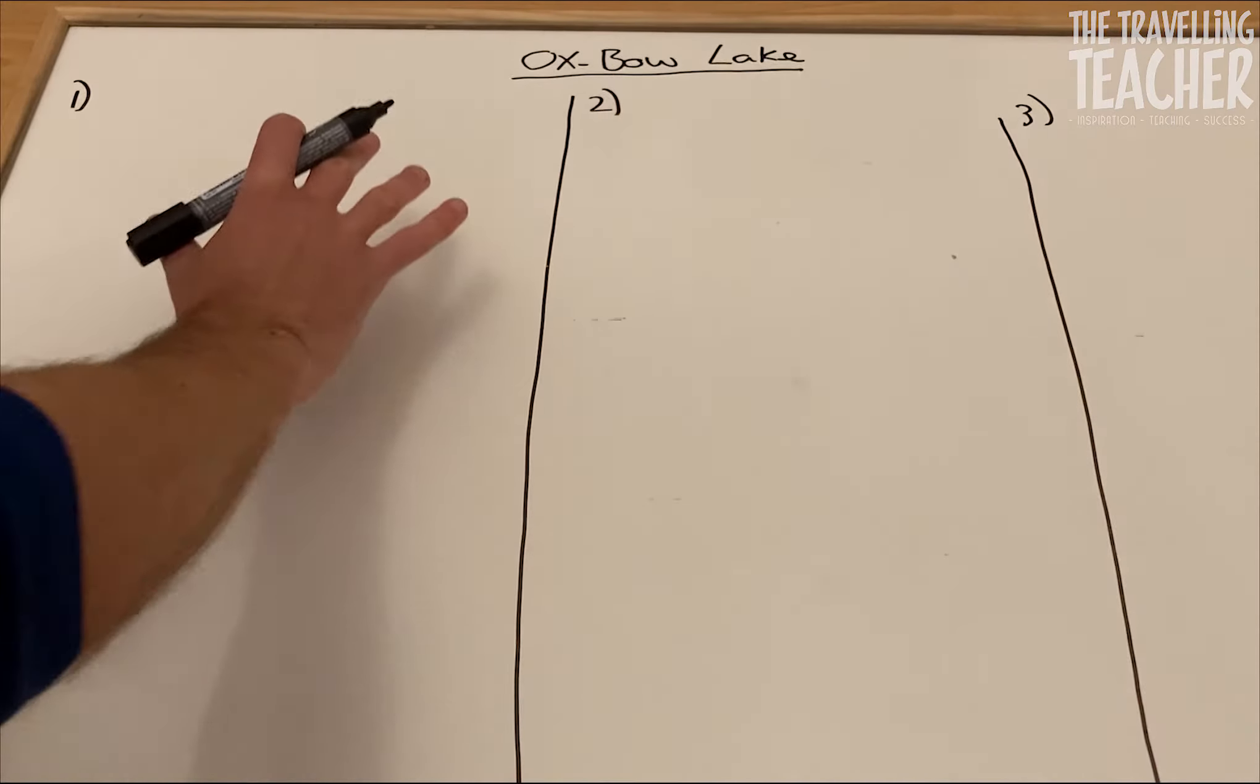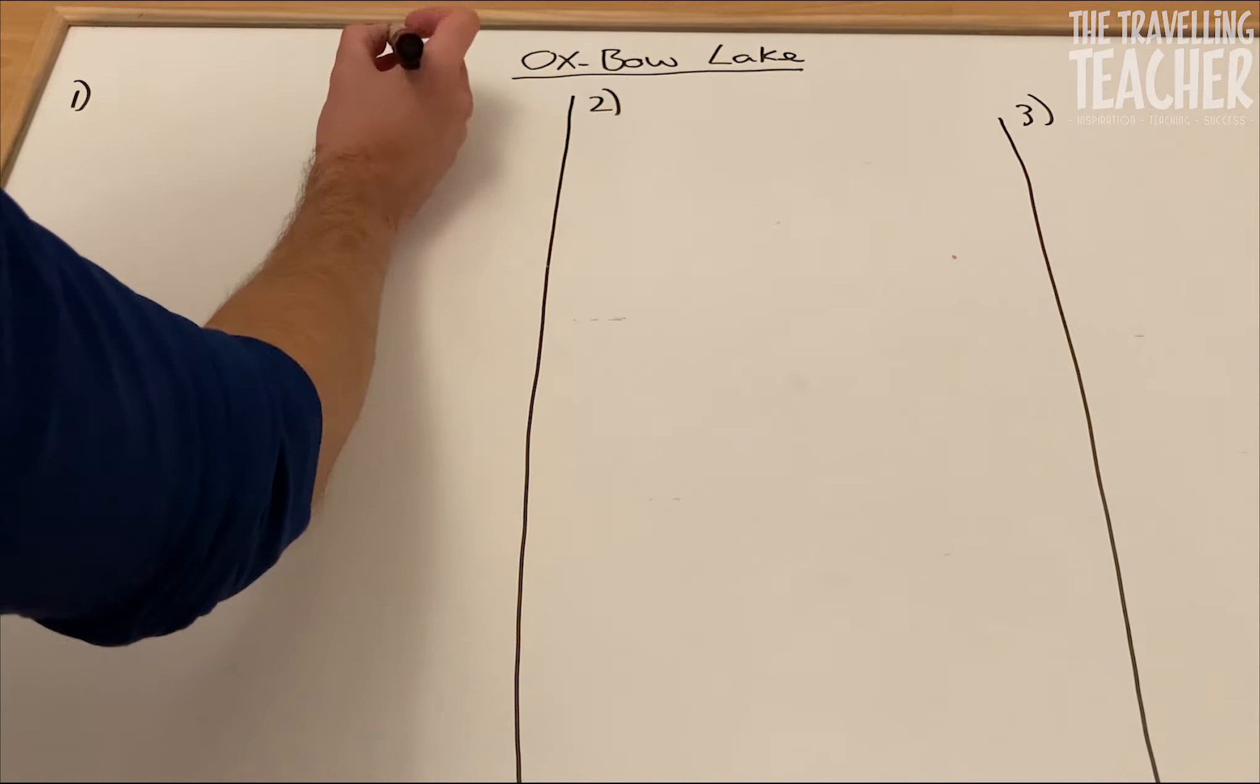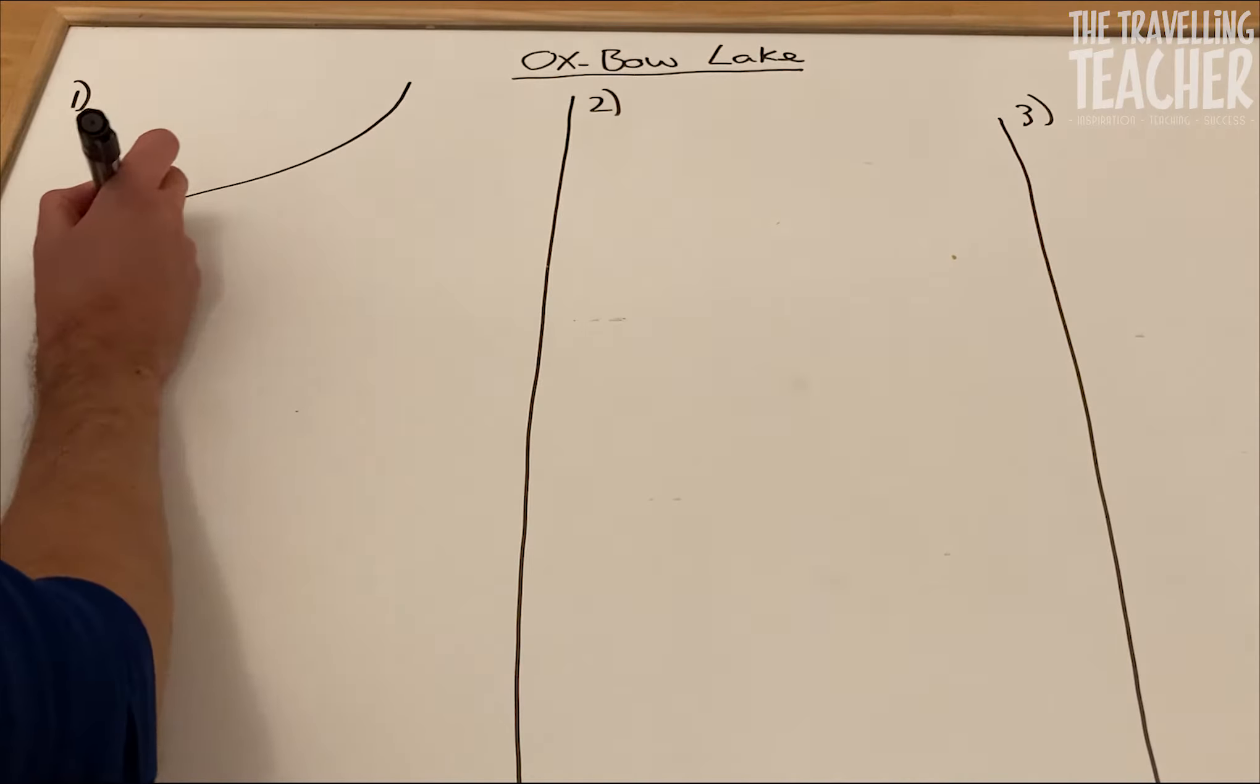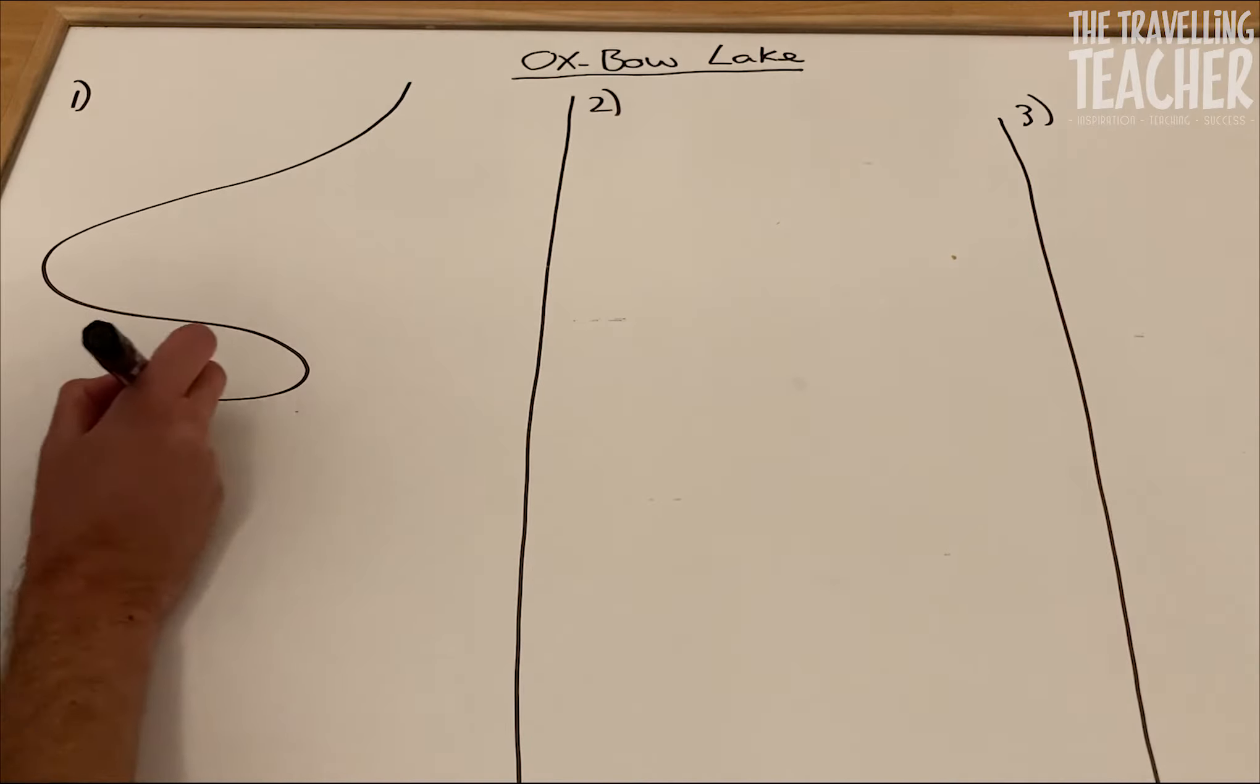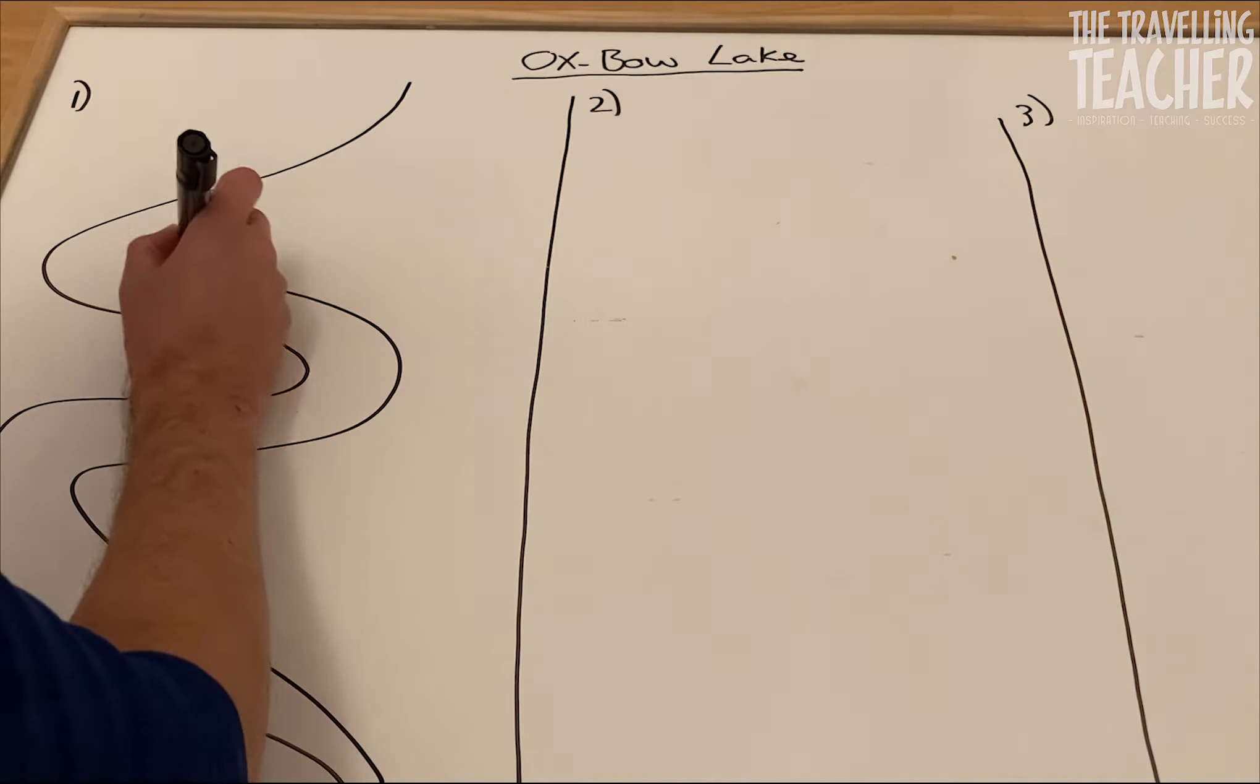I have split the board into three sections: one, two, three. Let's go straight into stage one. So the first thing I'm going to do is draw my river. There we go. Right, there's my river.